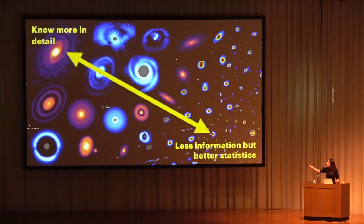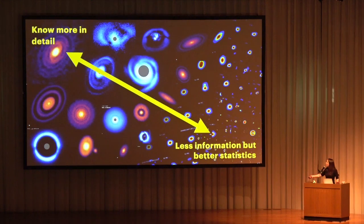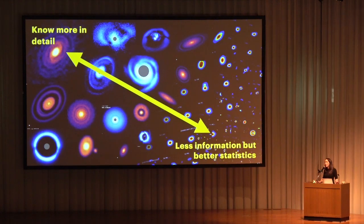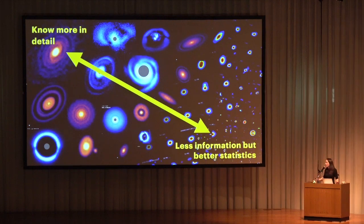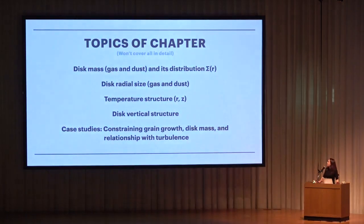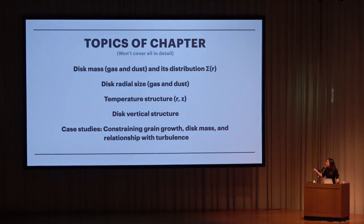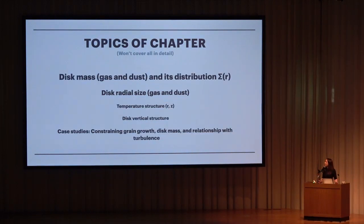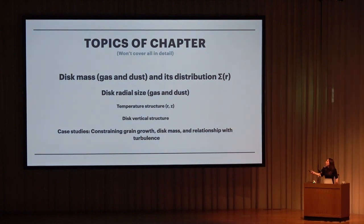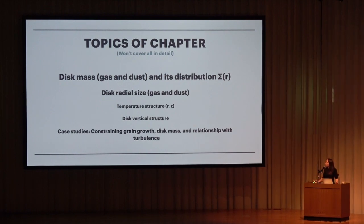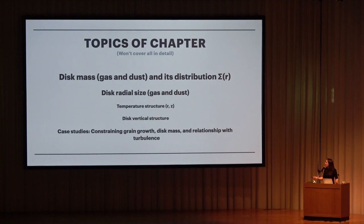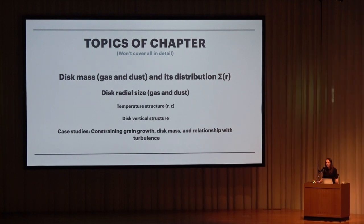The goal is to connect the things we know a lot about from detailed studies and apply them to the larger population of disks where we don't know much individually, but where we can start to average over uncertainties. The topics of our chapter focused on disk mass and its distribution (sigma), disk radial size in both gas and dust, temperature structure, vertical structure, and case studies on grain growth, disk mass estimation, and relationships with turbulence.